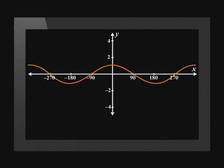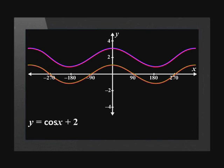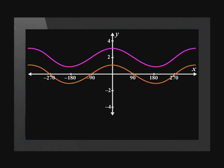Let's plot the standard graph of y equals cos x, and on the same set of axes draw the same graph two units above it. The equation of the new graph is y equals cos x plus 2. Now let's sketch y equals cos x minus 3 on the same set of axes. This graph is three units below the standard function.